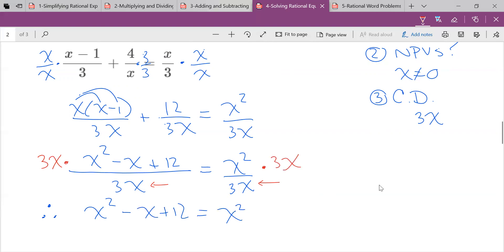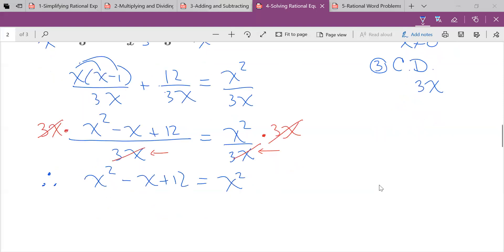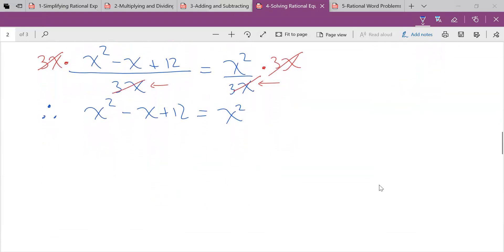And then what you should notice is 3x divided by 3x is 1. Look at, you end up in the exact same spot. So I don't do that step. I just say if the left-hand side is equal to the right-hand side and the denominators are equal, therefore the numerators are equal.